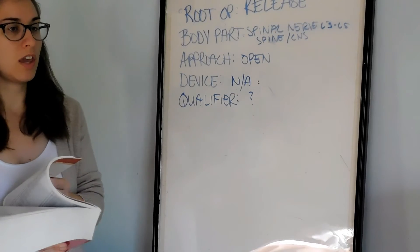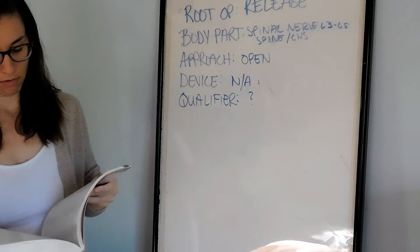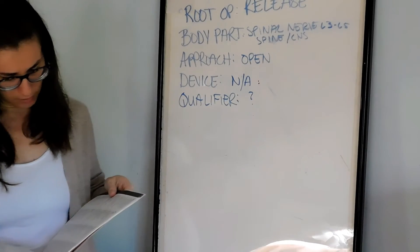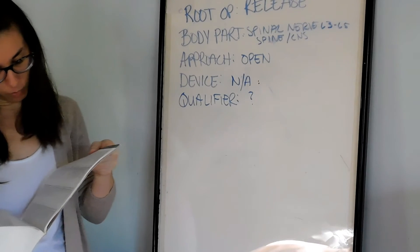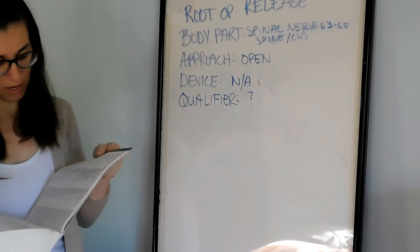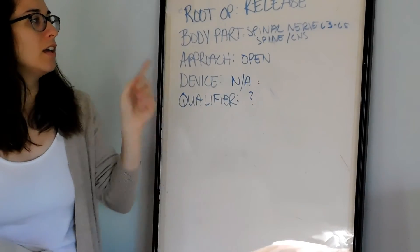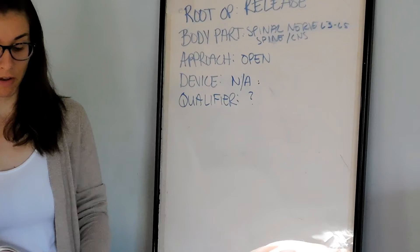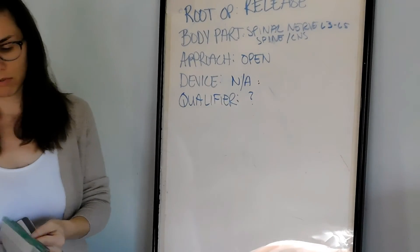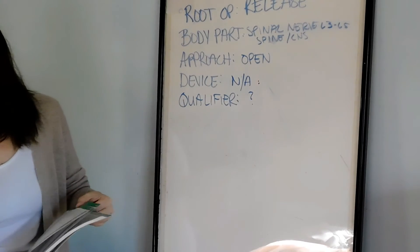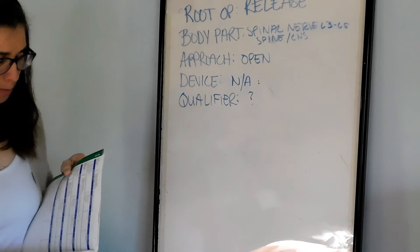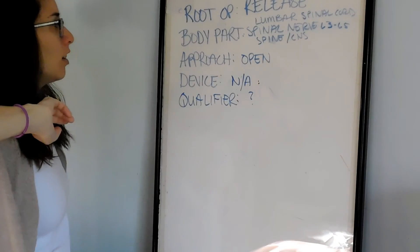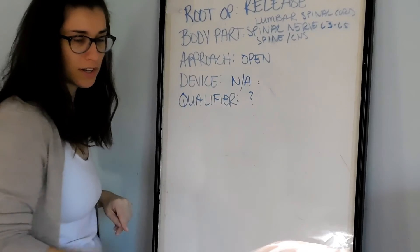Going to the index for decompressive laminectomy — looking up 'laminectomy' — it shows excision and release. We want Release, and it gives the option of CNS or PNS. Since we're talking about spinal nerves in the spine, that is the central nervous system — peripheral nervous system is any nerves outside the spinal cord and brain. In the CNS body system under Release, the option is lumbar spinal cord. There's no breakdown by specific levels, so it will just be lumbar spinal cord.